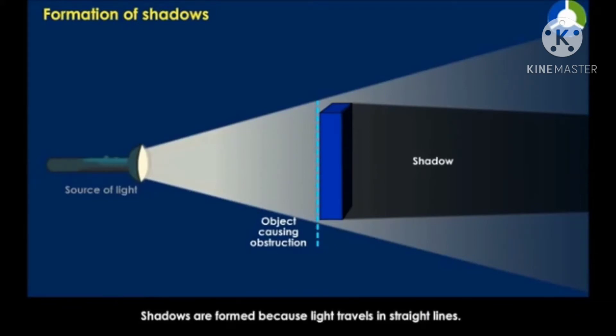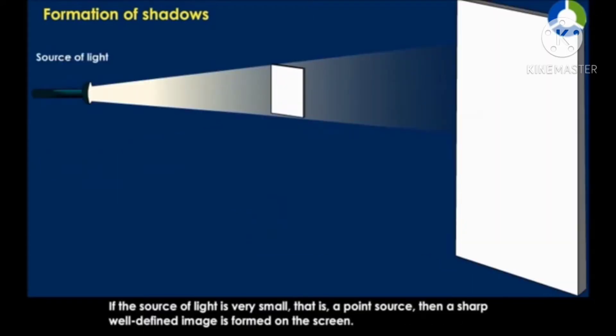Shadows are formed because light travels in straight lines. If the source of light is very small, that is a point source, then a sharp, well-defined image is formed on the screen.